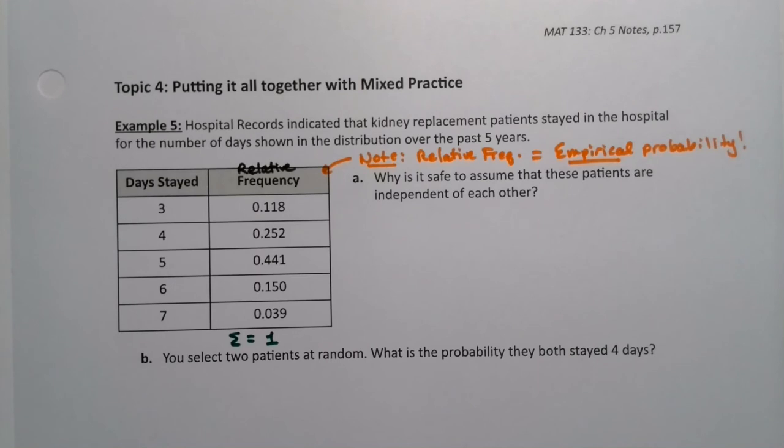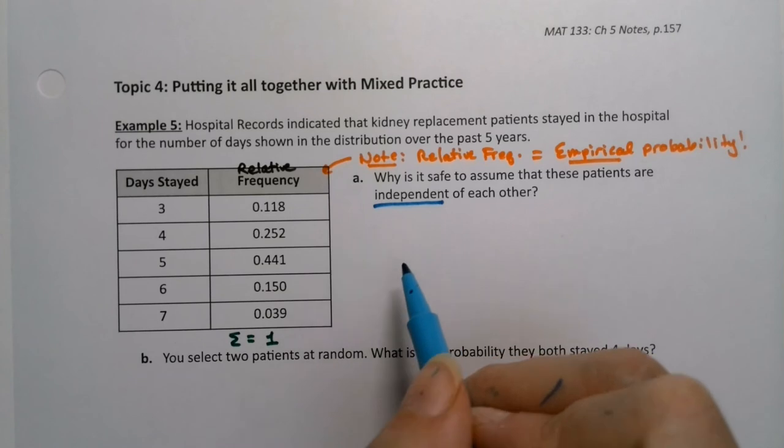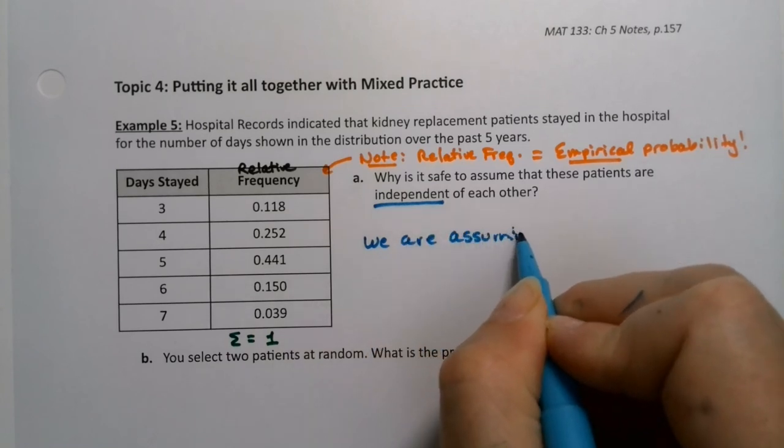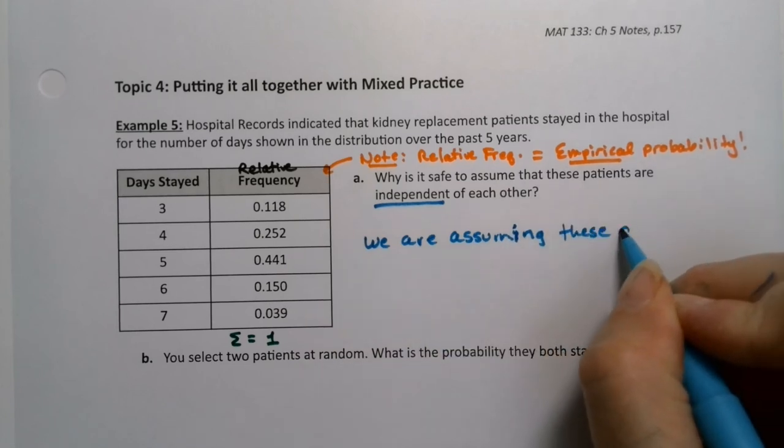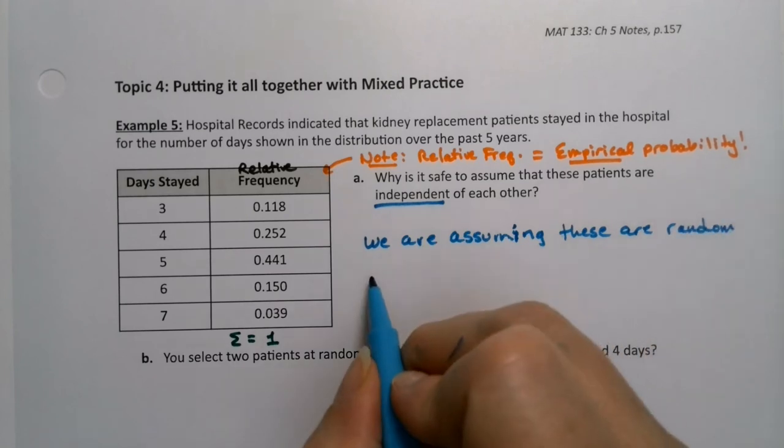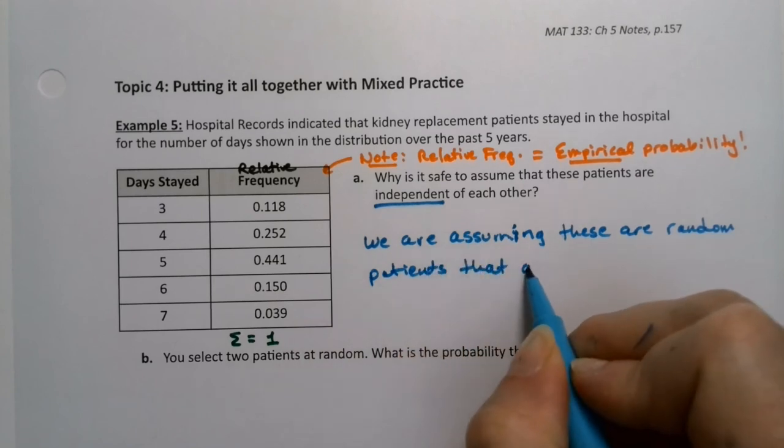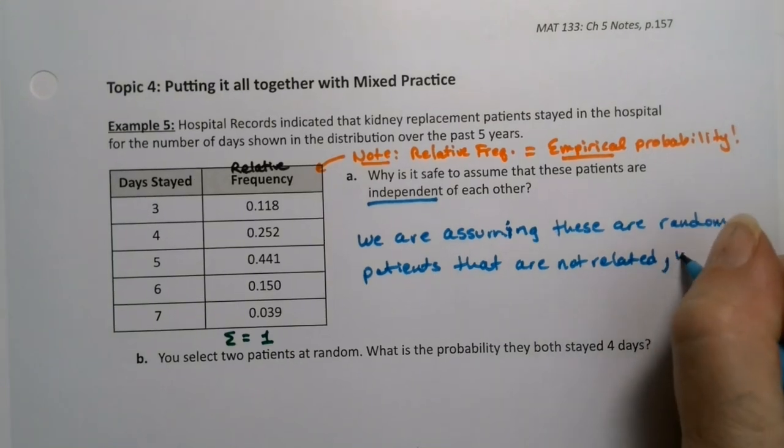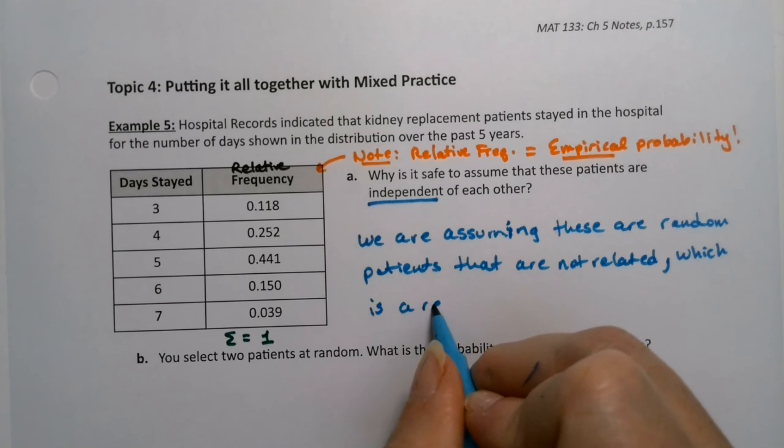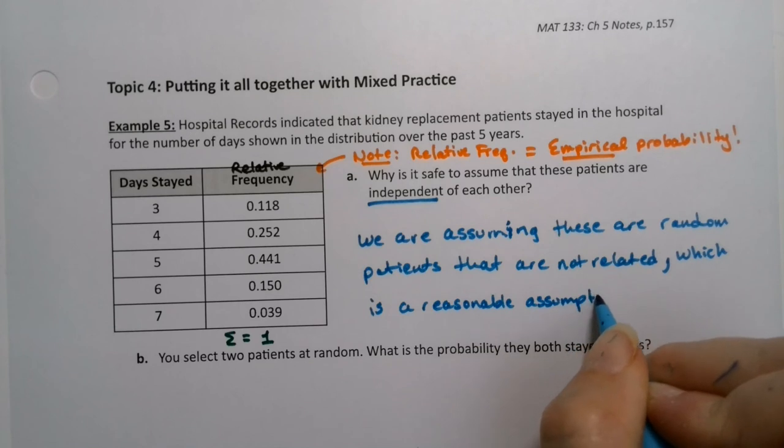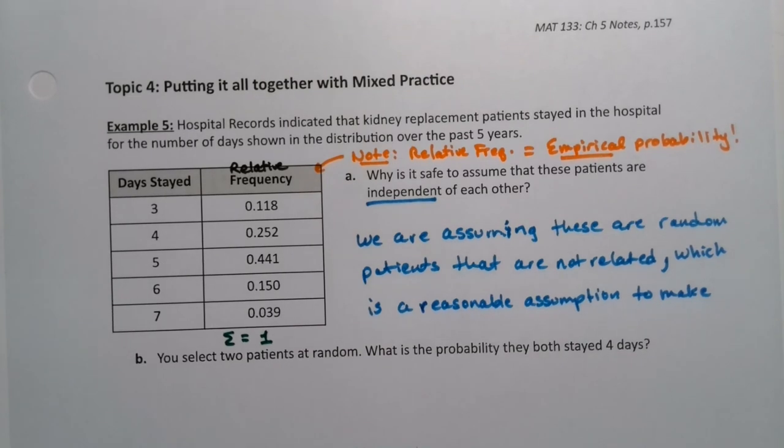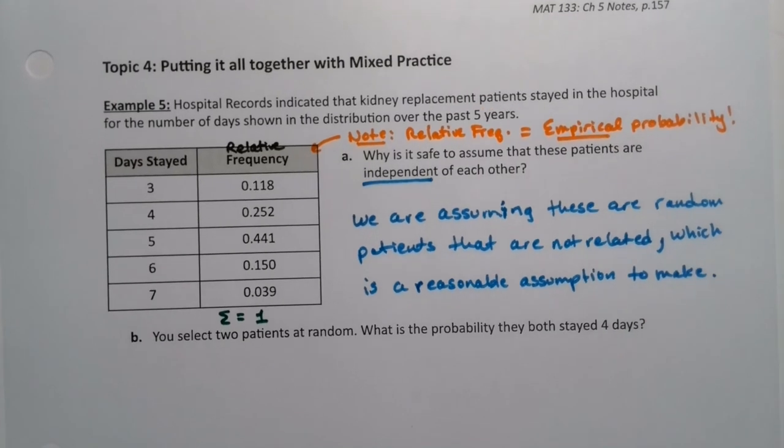All right, why is it safe to assume that these patients are independent of each other? That's a big assumption, and we're going to make that assumption, but why is it safe to assume that? Well, because these are random patients that don't have anything to do with each other. So we are assuming these are random patients that are not related, which is a pretty reasonable assumption to make. We actually do this a lot in later chapters. We just kind of assume it's random, assume it's independent, it's fine. We'll get a little bit more into the weeds in later chapters about those assumptions, but nevertheless, we will make this assumption pretty regularly.